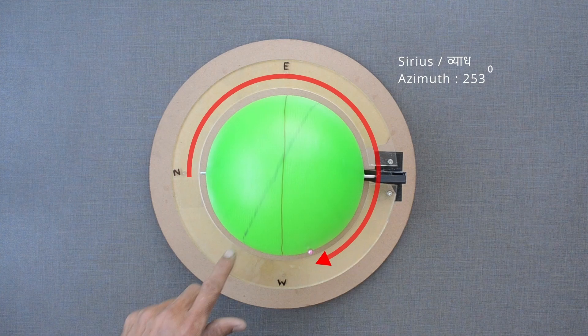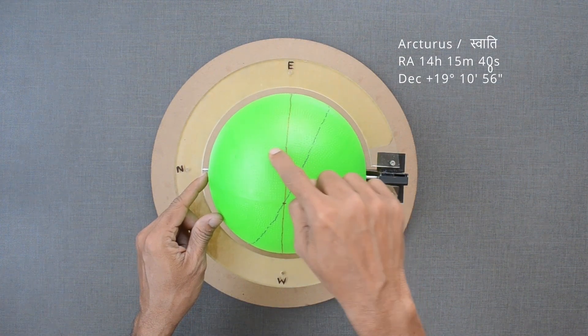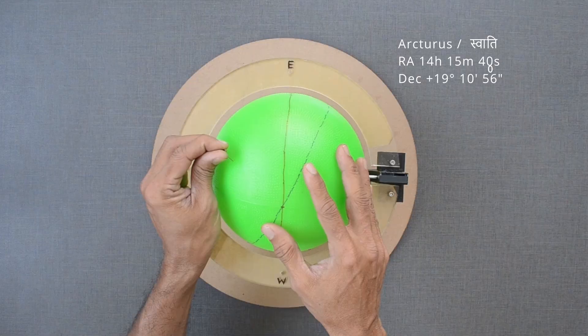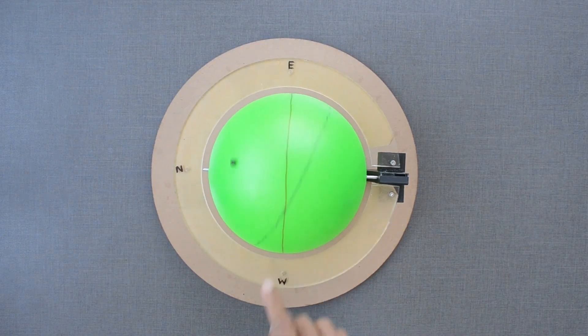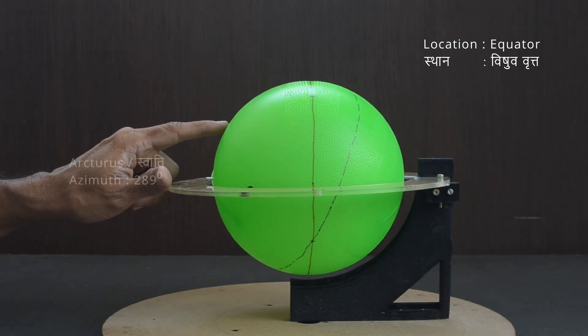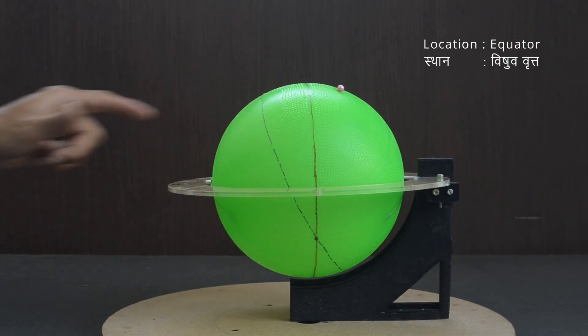Let us place another star in the northern part, Arcturus or Swati which is as per this right ascension and declination coordinates. This is true for the equator.